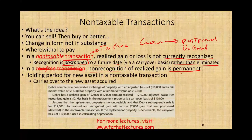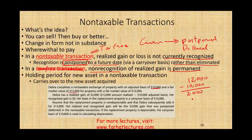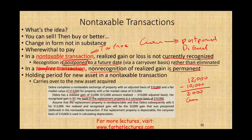Example: Deborah completes a non-taxable exchange of property with an adjusted basis of $10,000 and a fair value of $12,000 for a property with a fair value of $12,000. If Deborah sold this asset, she would have a gain of $2,000 ($12,000 minus $10,000), on which she would pay taxes. She has a realized gain of $2,000; her recognized gain is zero. Her basis in the replacement asset is the carryover basis of $10,000 — she avoided paying taxes by going through a non-taxable exchange.